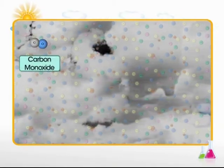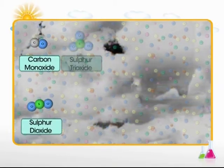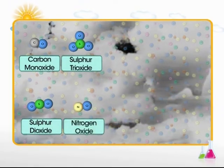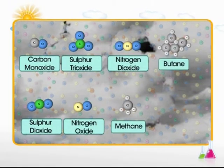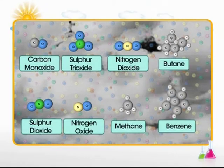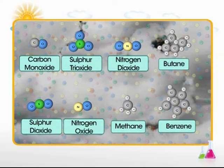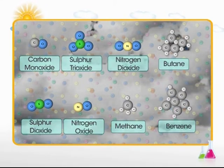Gaseous air pollutants may include toxic gases like carbon monoxide, sulfur dioxide, sulfur trioxide, nitric oxide, nitrogen dioxide, methane, butane, benzene, and a few other organic and inorganic gases.